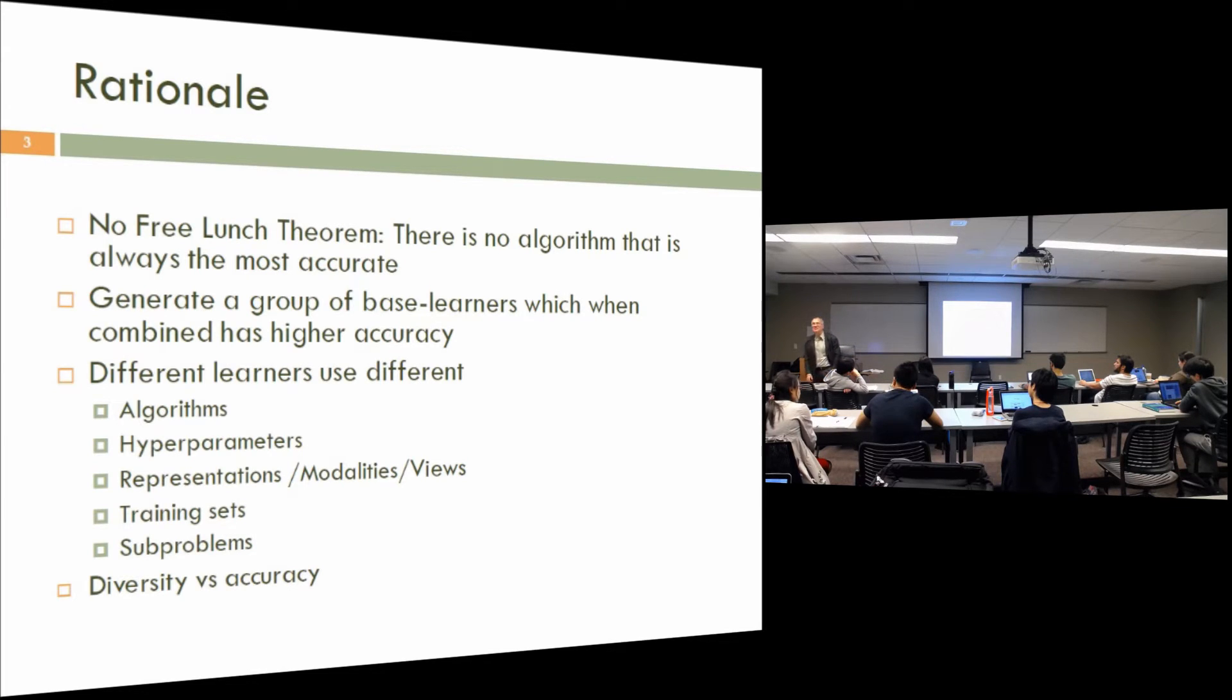So they can be algorithms of the same type but parameterized, and we use different values of hyperparameters. And then we will end up with different algorithms. There are other cases that are possible. It may be that we have this situation where a certain phenomenon is represented by several different sets of attributes.